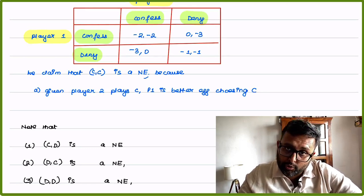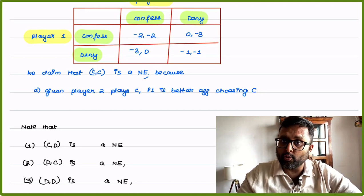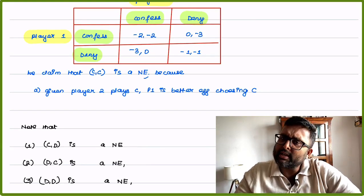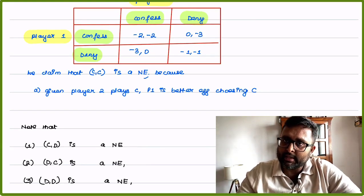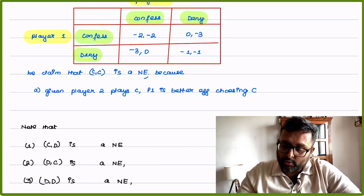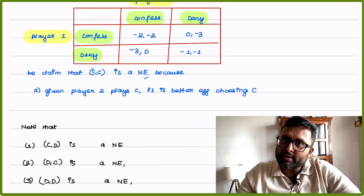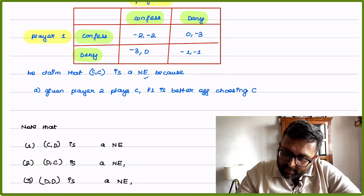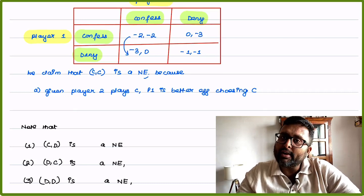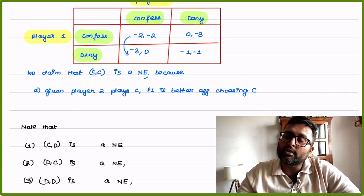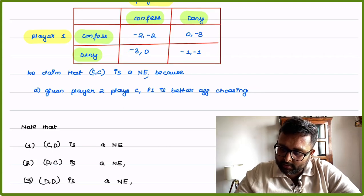If you are player 2 and you are confessing, do I — player 1 — have a profitable deviation from moving from confess to deny? No. Why would I want to go from 2 years in jail to 3 years in jail? That is not a profitable deviation.